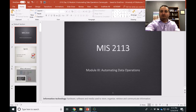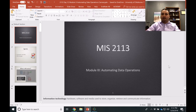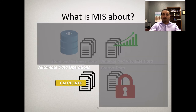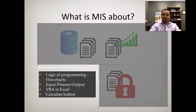In this video we will go over automating data operations and programming, and how to start our first program. We'll go briefly over automating with VBA and VBA concepts. We already talked about the logic of programming — flowcharts and the input-process-output model — and today we will start with VBA in Excel and create a calculation button.